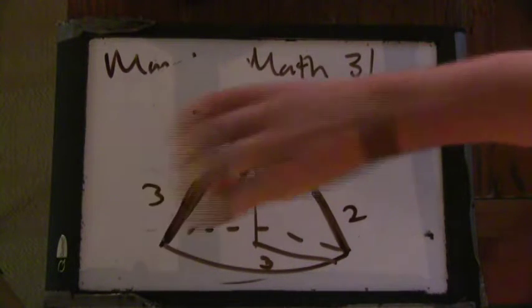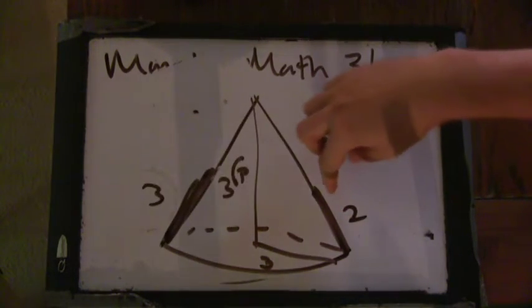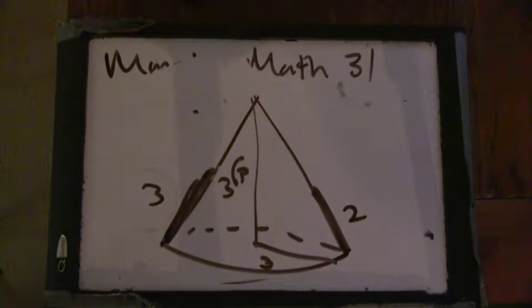Okay? This distance here is 2. This distance here is 3. The question is what's the shortest distance on the cone between those two points.